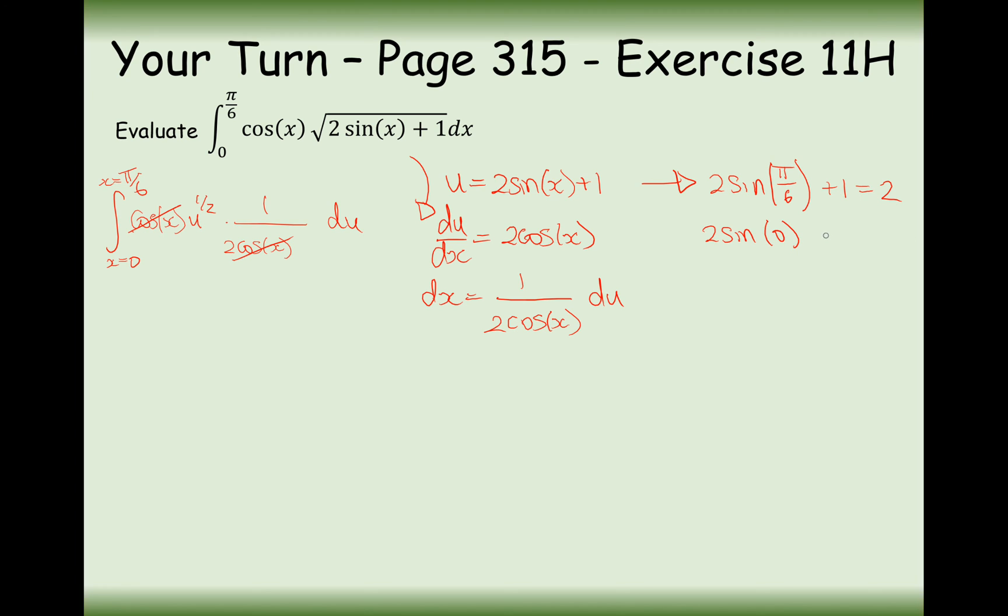And then when I substitute in 0, sine of 0 is 0, 2 times 0 is 0, plus the 1, I get 1. So now my new boundary here is going to be from 2 to 1, and it's going to be... We've got the half in there. Don't forget that. I'm going to pull that out to the front. And then it's just going to be u to the power of a half du.